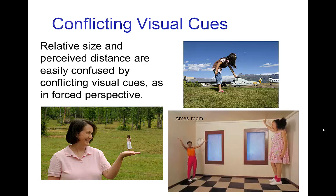One of the challenges of using perspective to establish size is that it's possible to fool this visual cue through so-called forced perspective. In these photos, we realize that a girl is not a giant in front of a helicopter — she is simply much closer in the foreground while the helicopter is much farther back. Simply because her hand is visually near the top of the helicopter, it makes us think she's touching it. Similarly with a photo of a mother and daughter — the daughter is far in the background, but the arrangement makes us think initially that the mother is holding a tiny child in her hand.